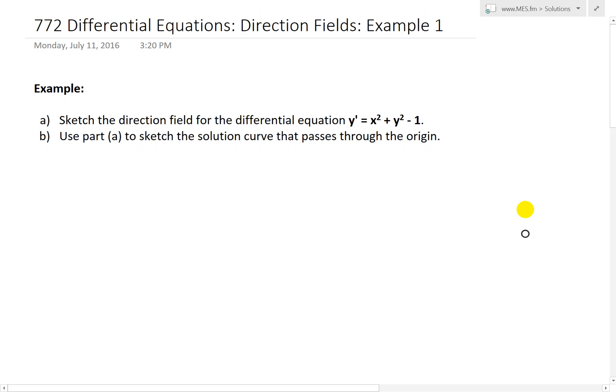Basically, this example states part A: sketch the direction field for the differential equation y' = x² + y² - 1. And part B says: use part A to sketch the solution curve that passes through the origin, or the point (0, 0).